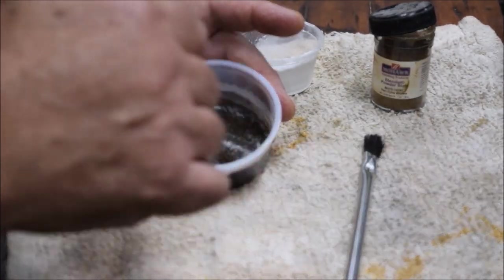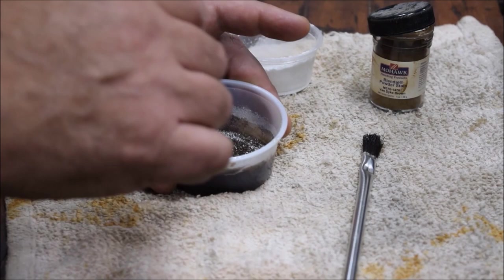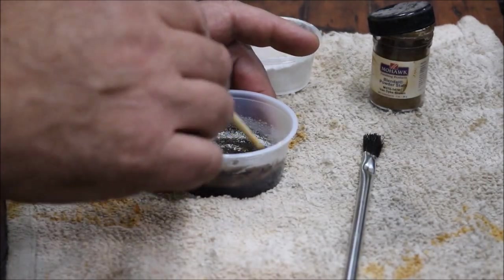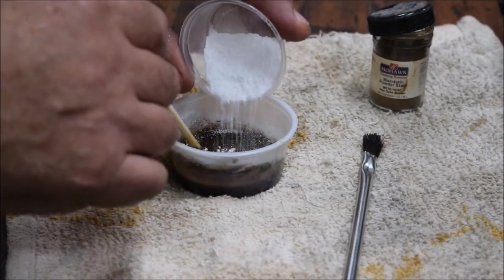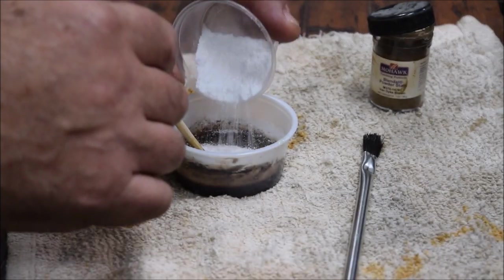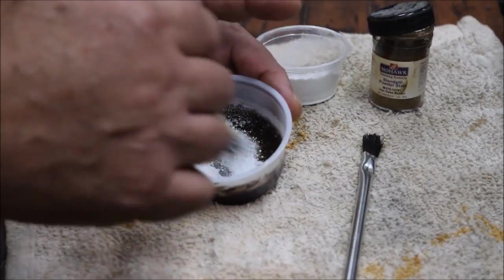But we're basically just thickening up the epoxy. As you know, epoxy, particularly epoxy with filler, will act like a crack filler. It will act to fill voids, unlike regular carpenter's glue.